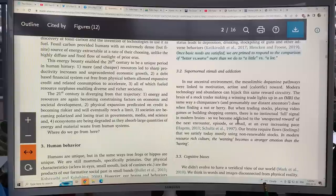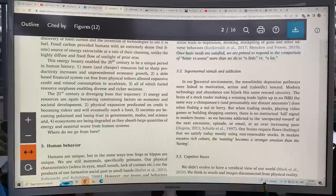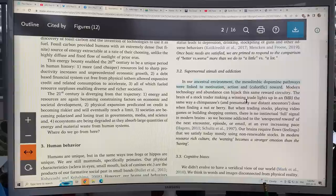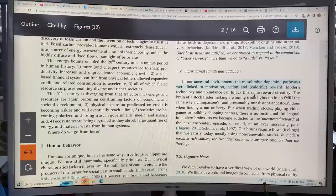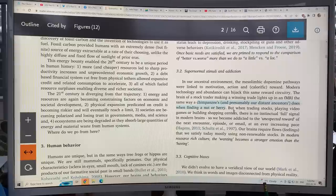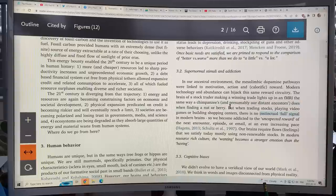We've got huge stimuli and addictions. In our ancestral environment, the mesolimbic dopamine pathways were linked to motivation, action and calorific reward. But modern tech and abundance has hijacked this reward circuitry. The brain of a stock trader making a winning trade lights up a functional MRI the same way a chimpanzee does when finding a nut or berry. But when you're trading stocks, there's no stop signal.